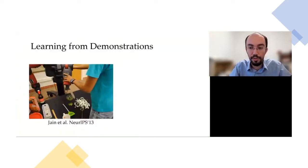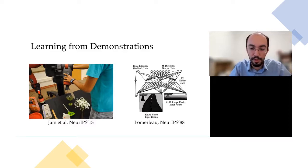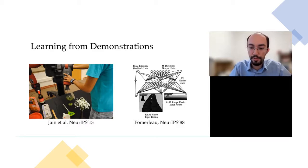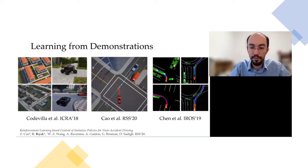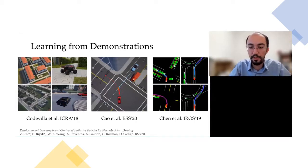One very common way to learn objectives is to collect demonstrations from agents and then learn a policy or reward function. Behavioral cloning is one such idea that has been around for more than 30 years. These learning from demonstration methods work great in many settings — for example, many works, including some of ours, use these techniques to learn safe and efficient policies for autonomous cars. But these techniques were usually not enough; we had to learn multiple different policies and try to optimally switch between them, and in some cases additional safety controllers were necessary.